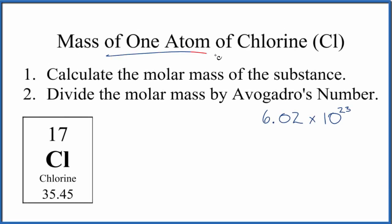Let's determine the mass of one atom of chlorine (Cl). Really, all we're doing is taking the molar mass, or in this case the atomic mass since it's an atom, and dividing that by Avogadro's number. That'll give us the mass of one atom of chlorine.